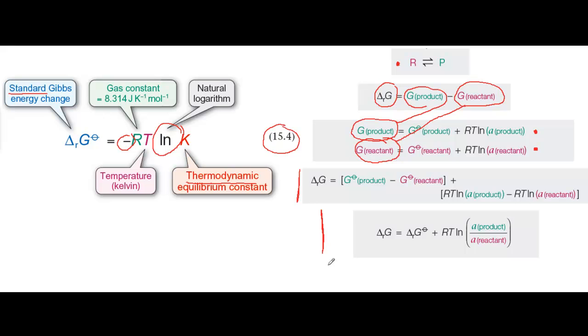Delta G for a reaction is delta G standard plus RT log activity of the product over activity of the reactant.